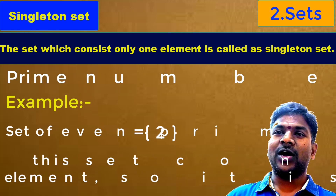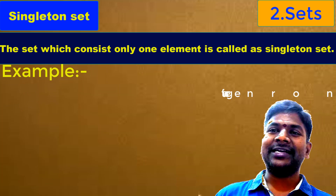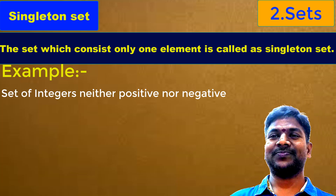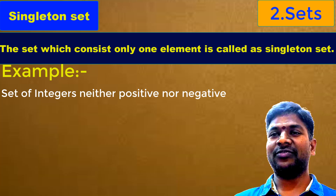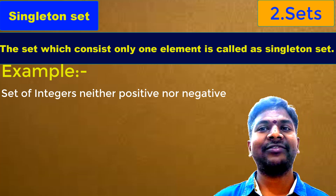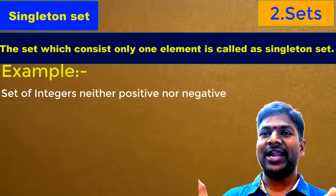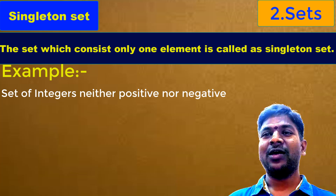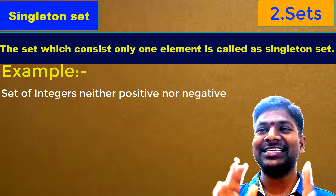Let us see one more example. Consider the set of integers which are neither positive nor negative. All integers include positive integers 1, 2, 3, 4, 5, and so on, and negative integers −1, −2, −3, −4, −5, and so on. Between these positive and negative integers, there is 0. This 0 is neither positive nor negative. How many such integers can you find which are neither positive nor negative? Only one — that is 0.